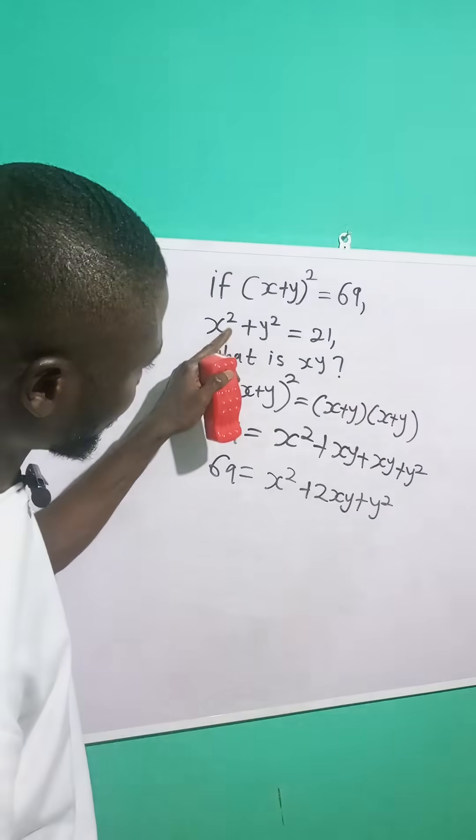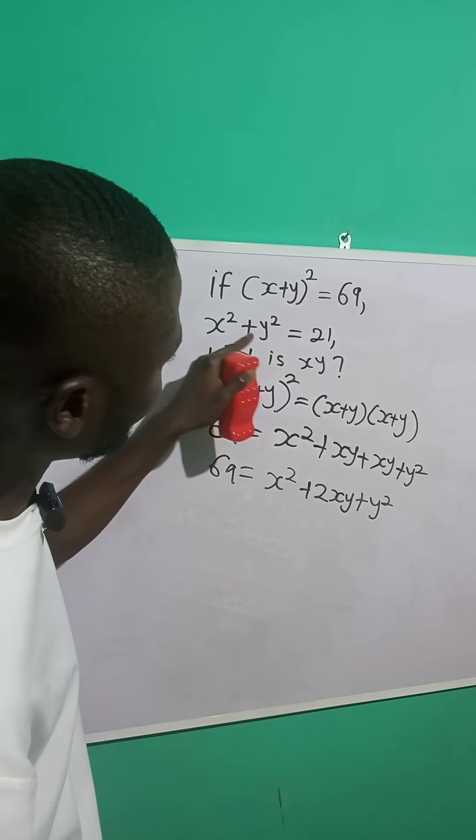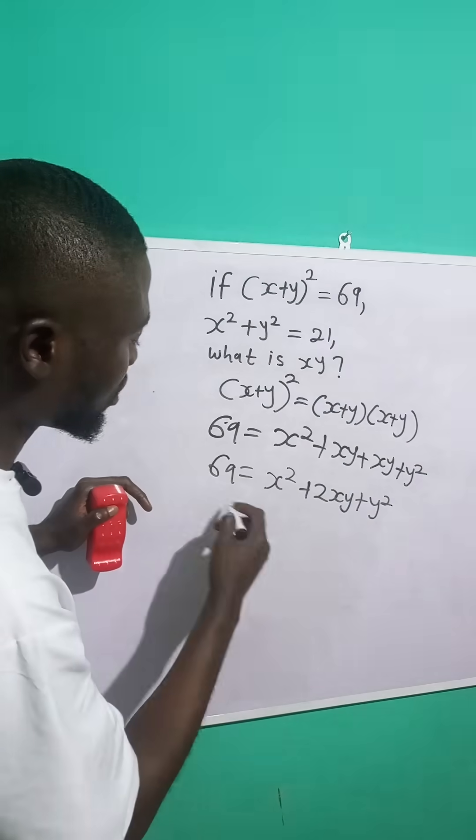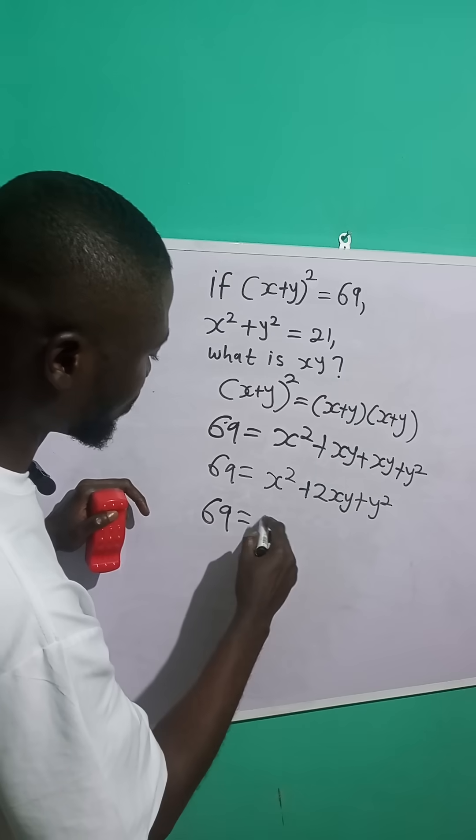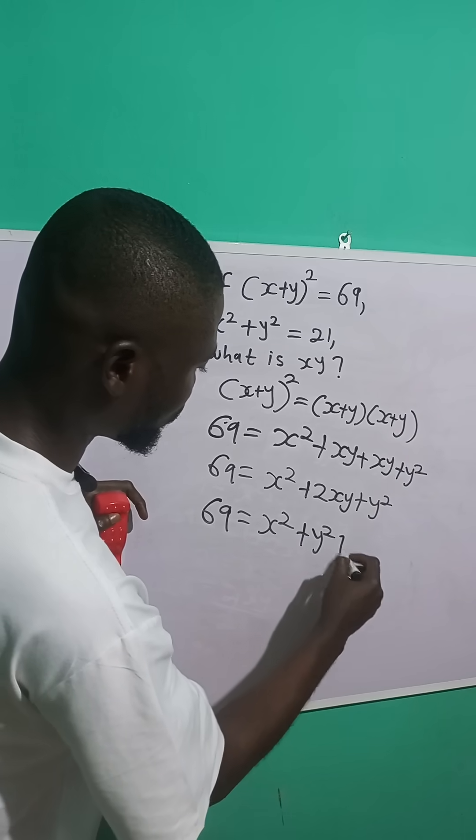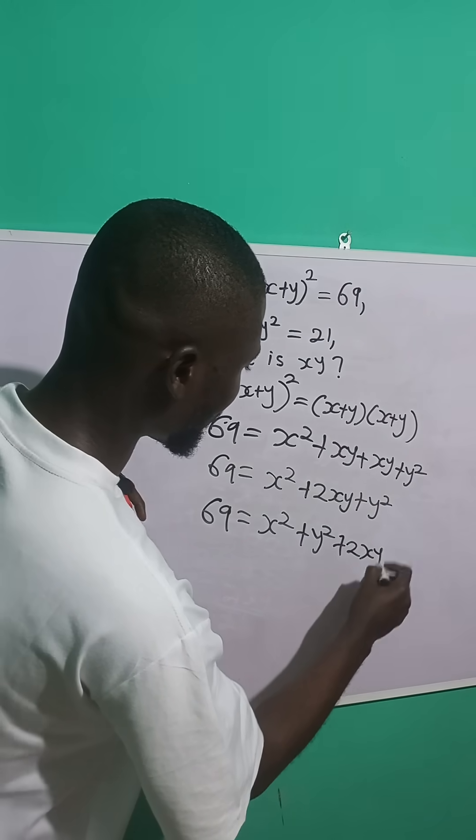Look at the second equation. It says x squared plus y squared is equal to 21. So let's split x squared and y squared. So 69 is equal to x squared plus y squared plus 2xy.